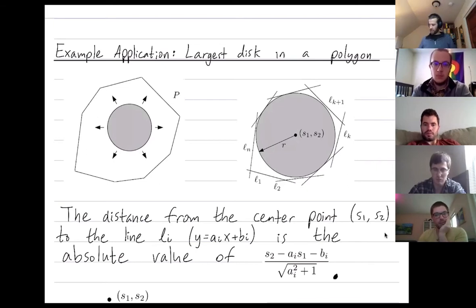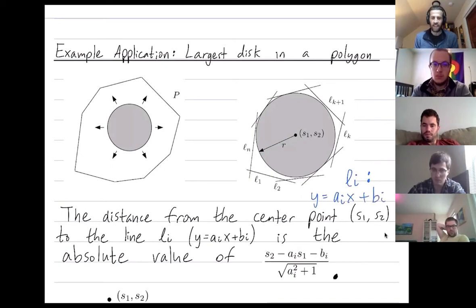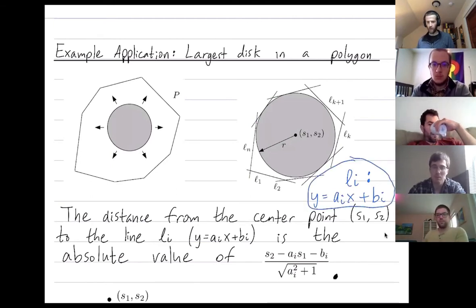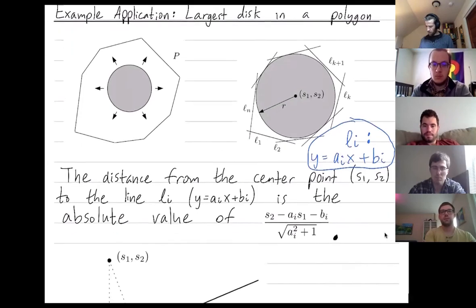And now our task, so each line is described, so line i has an equation which is given by y equals a i x plus b i. So a i is the slope of the ith line and b i is the y-intercept of the ith line. And we want to find the center s1, s2, and the radius r of this largest disk that can fit inside.